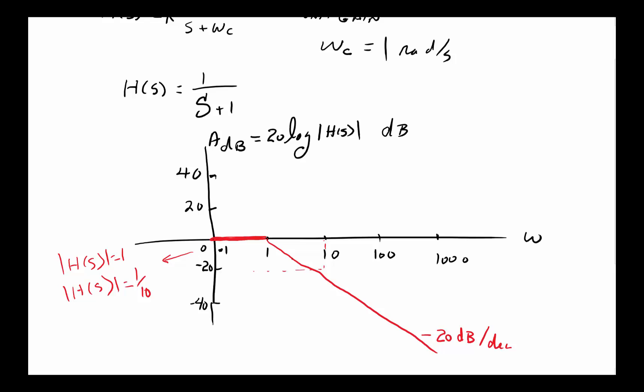and then at this point one-tenth of everything is going through. So now the question is, can I make this sharper? In other words, at 10 Hertz I do not want to have, maybe I want a lot less to go through. How would I